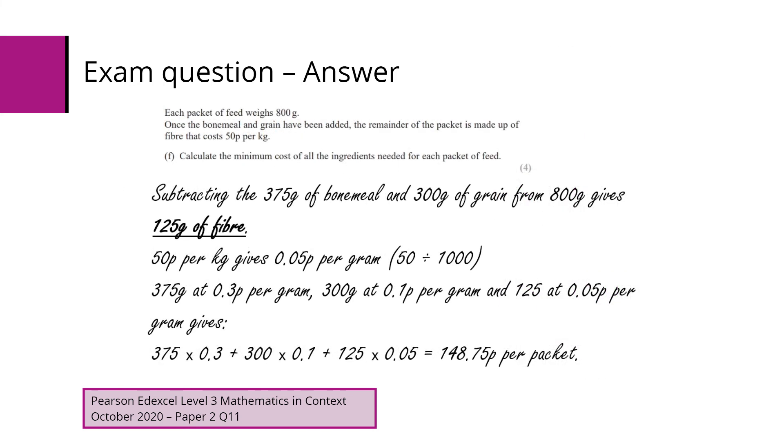Therefore, using those for part F, if each packet weighs 800 grams, if we subtract those two values, the 375 and the 300 from the 800, it means we must have 125 grams of fibre left. Converting the 50p per kilogram into 0.05 pence per gram, we can then use the amounts and the price per gram, multiplying to then give a cost of 148.75 pence per packet.